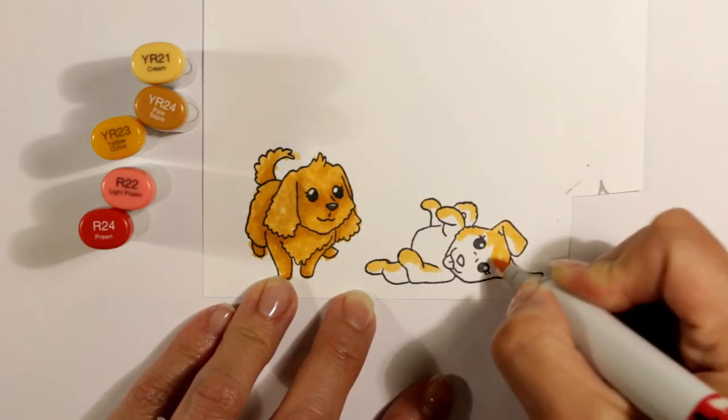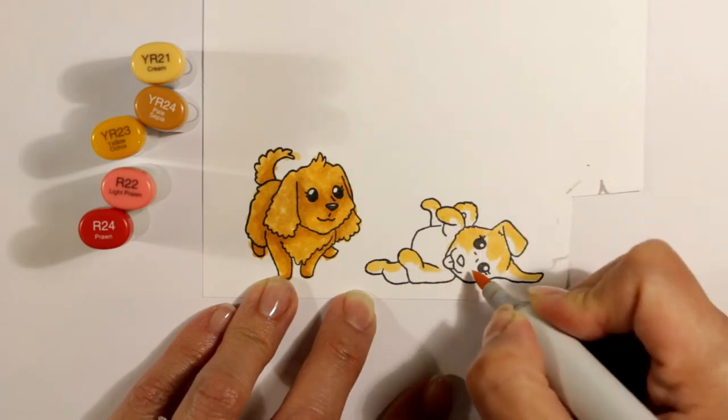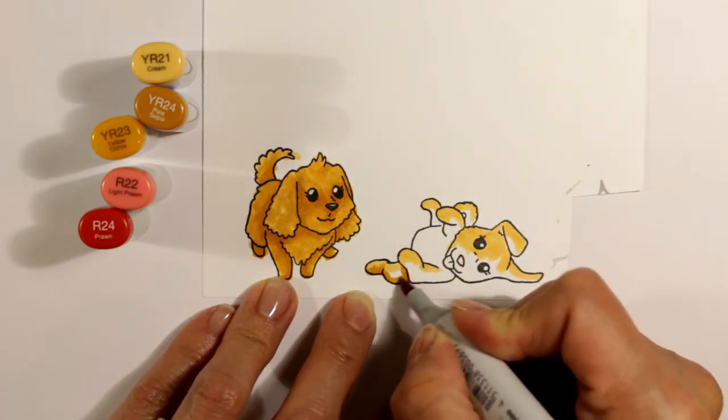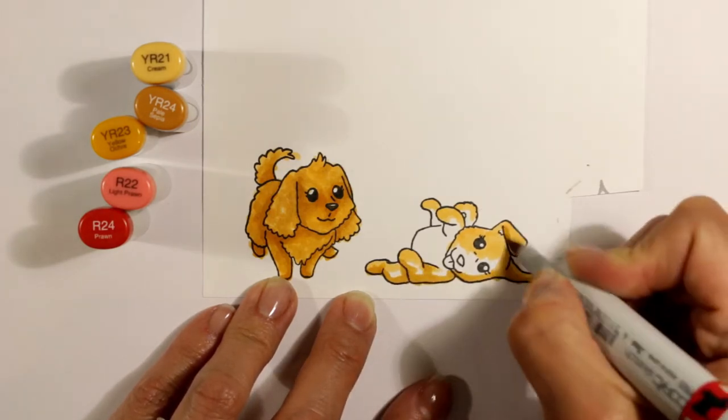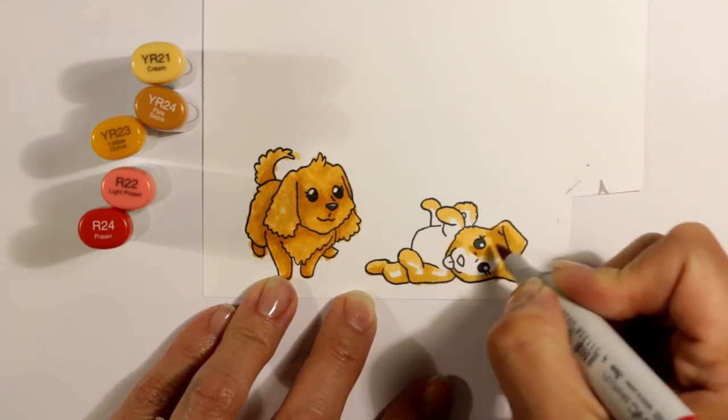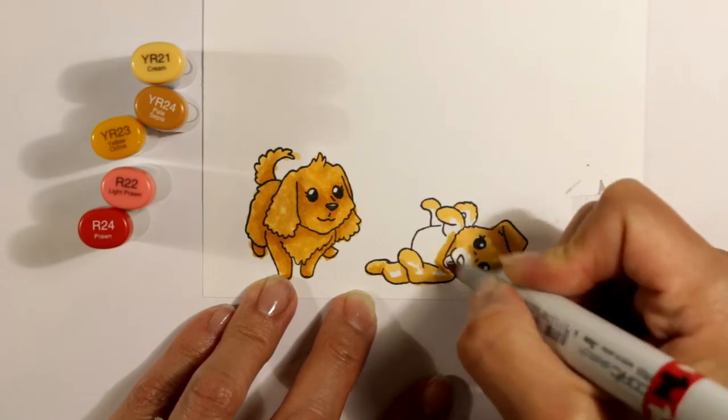And then for the puppy laying back on its side asking for a belly rub, I'm doing the same thing. I'm going in highlighting all the lightest areas and again I'm assuming that the light source is coming from the top and from the right, so all of the areas underneath, the lower parts of the puppy, underneath the muzzle, where the ear would cast a shadow.